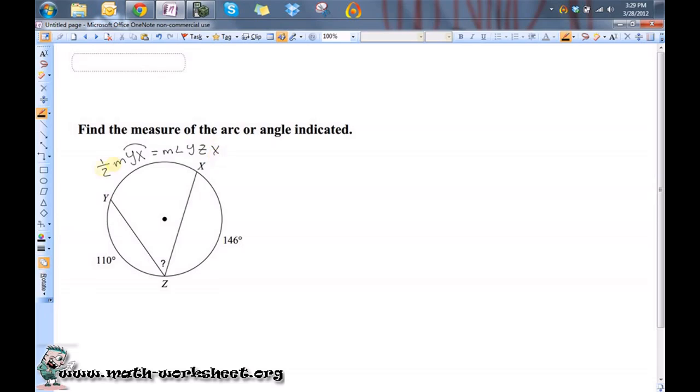Okay, now you could rewrite that as 2 times the measure of angle YZX is equal to the measure of the arc YX. Okay, so these two are equivalent statements. I just use a little algebra to rewrite it.